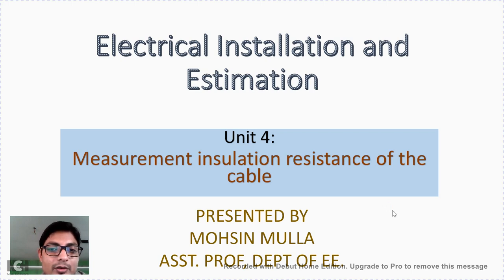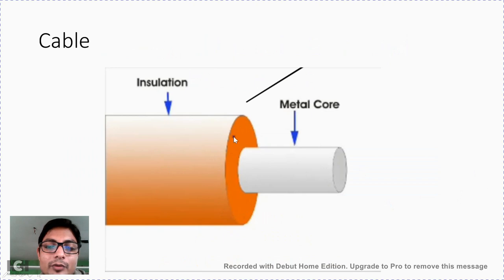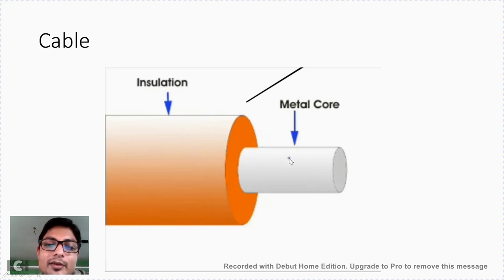In this video lecture we are going to see measurement of insulation resistance of cables. Insulation resistance is the resistance of the PVC or any other insulating material covering provided on top of a conductor in the cable. In this picture you can see a single core cable, where there is a conductor with an insulation layer on top. This insulation layer prevents the live conductor from coming in contact with the grounded parts. The thickness of this insulation depends upon the voltage capacity of the cable.